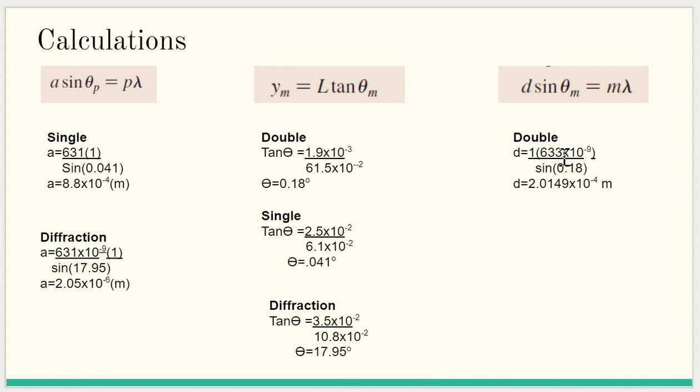From there we were able to solve D for the double, which came out to 2.01 times 10 to the negative 4 meters. And for the single, the thickness of the slit was 8.8 times 10 to the negative 4 meters. And for the thickness of the slit for the diffraction, it was 2.05 times 10 to the negative 6 meters. And here we have our thetas.